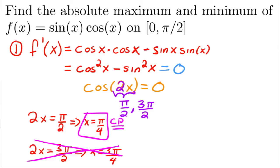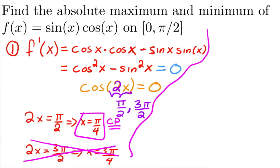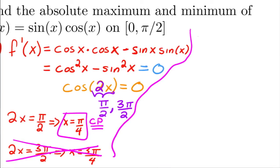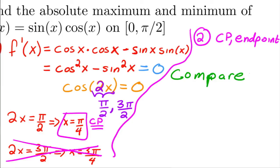In step two, we plug in and compare. We evaluate the function at the critical point and the endpoints. The possible locations for the absolute maximum or minimum are x = 0, x = π/2 (the endpoints), and x = π/4 (the critical point). We plug all three into the original function and pick the biggest and smallest.